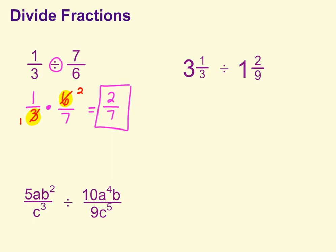Alright, moving on to our next example. Anytime you have mixed numbers, we do want to go ahead and put these into improper fractions. So just a reminder, starting with your denominator, we work our way around. We're going to multiply, 3 times 3 is 9, plus 1 is 10. So we have 10 over 3 divided by, and we're going to do the same thing. 9 times 1 is 9, plus 2 is 11 over 9.